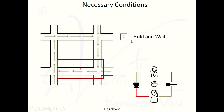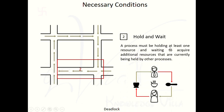Second condition — hold and wait. A process must be holding at least one resource and waiting to acquire additional resources that are currently being held by other processes. Right now this junction is held by these vehicles, and they are waiting to acquire the additional resource — the second junction. These vehicles are waiting to use the second junction, but the second junction is actually held by other vehicles. That is our second necessary condition: hold and wait.